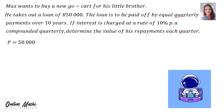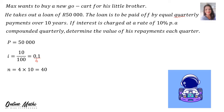If interest is charged at a rate of 10% per annum compounded quarterly, determine the value of his repayments each quarter. Summary: P, the present value of the loan, is R50,000. I is 10 divided by 100, equal to 0.1, and inside our sum we will divide by 4 because of the quarterly payments. N is 10 years times 4 because of the quarterly payments, so our N is 40.